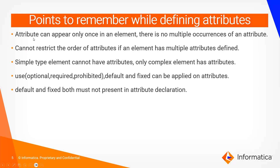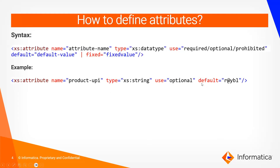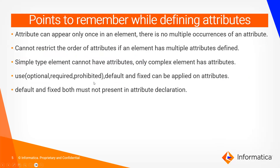Points to remember while defining attributes: First, an attribute can appear only once in an element — there are no multiple occurrences of an attribute. Second, you cannot restrict the order of attributes. If an element has multiple attributes, such as a type access code, product UPI, and product QR code, you cannot define a sequence for those attributes.